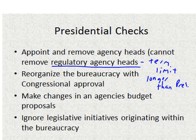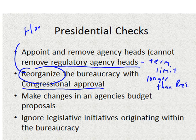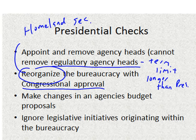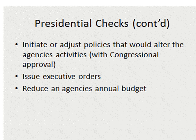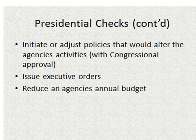The president can also reorganize the bureaucracy with congressional approval. The largest reorganization ever seen happened after 9/11 with the Department of Homeland Security, where the president added a new department and consolidated many different agencies into one group. He can also make changes in the budget — if he wants an agency to get less money, they'll have less power. And he can ignore legislative initiatives; if the bureaucracy says to carry out a certain policy, the president can tell his enforcement agencies not to do that. But the big check he has is appointment — that's your number one.